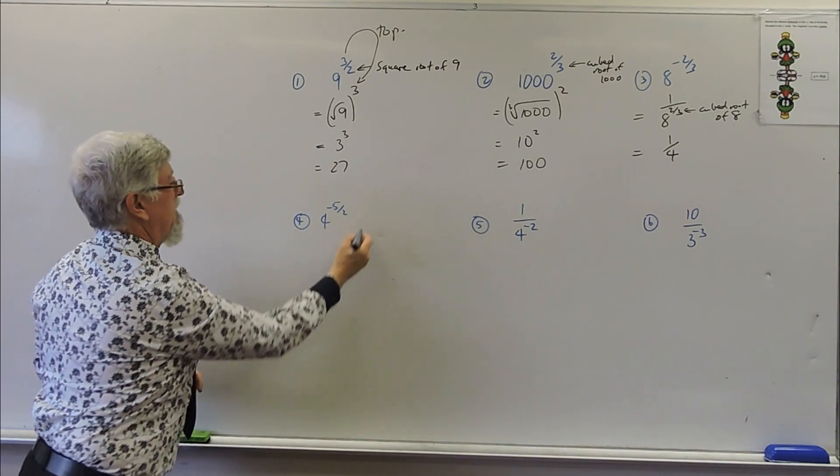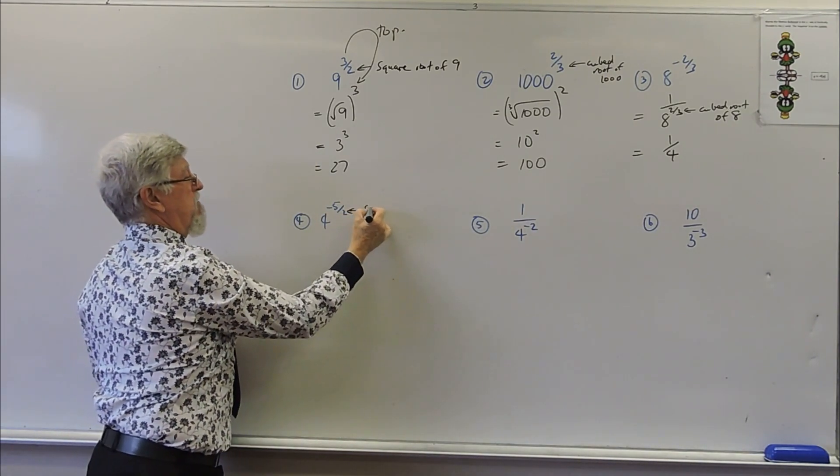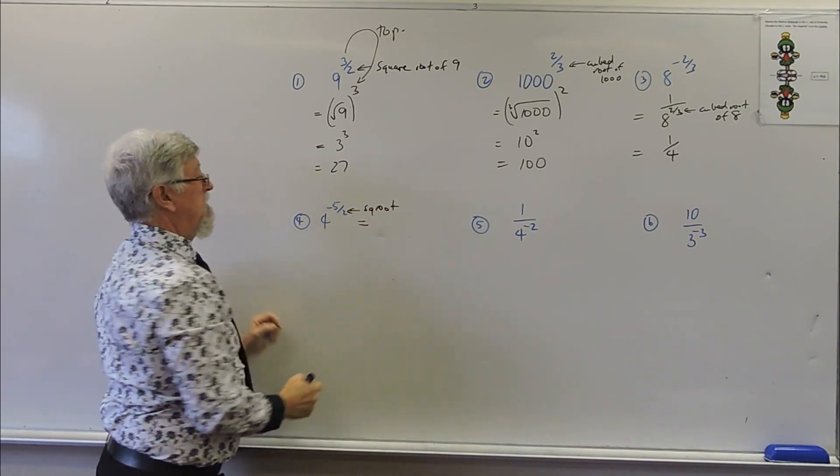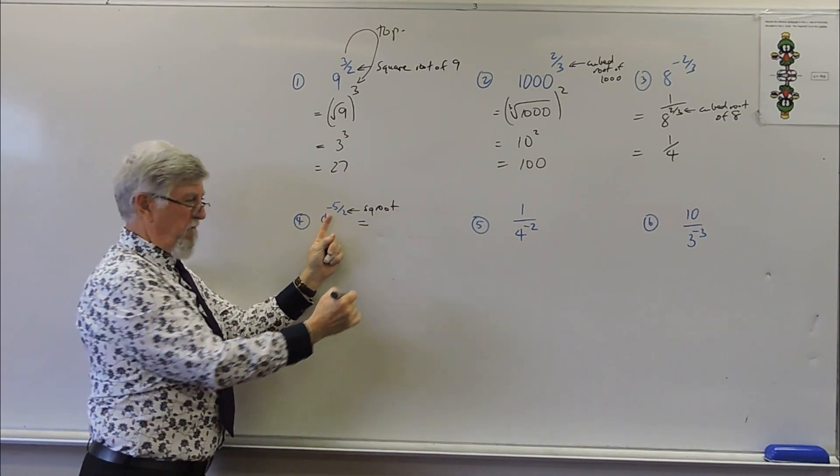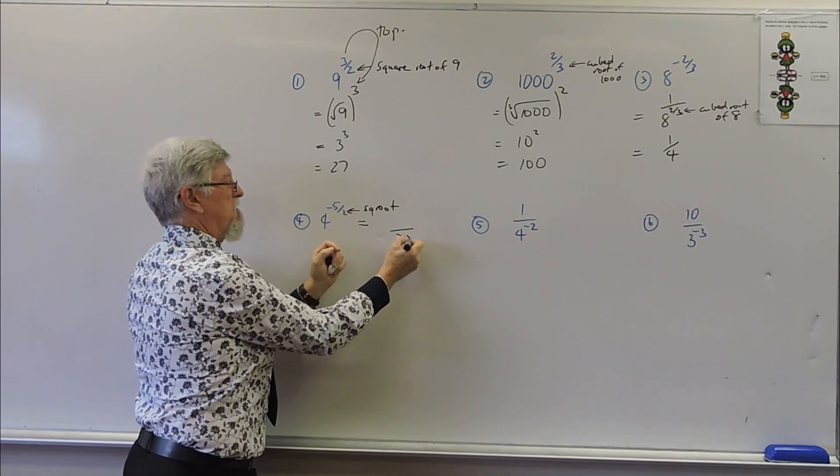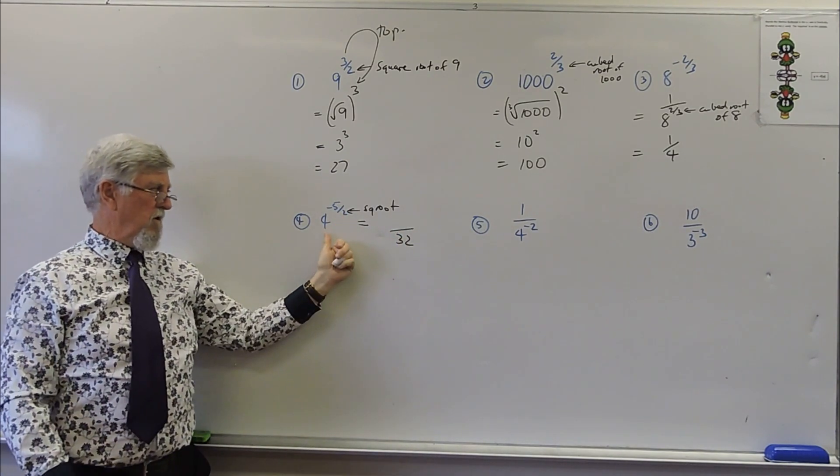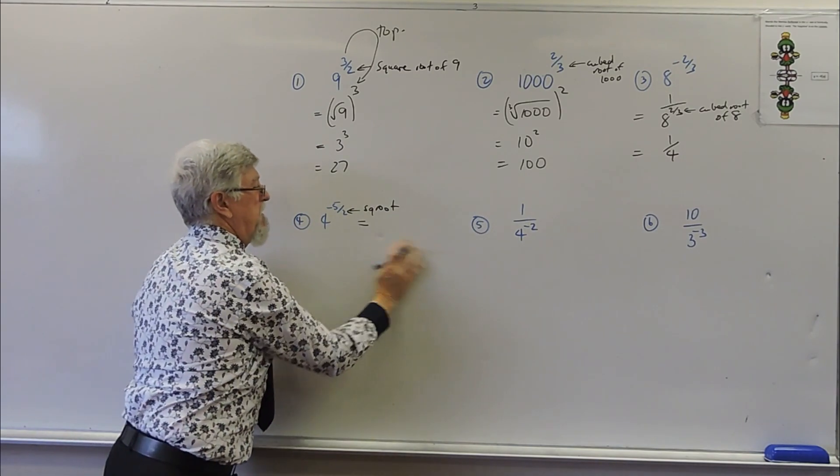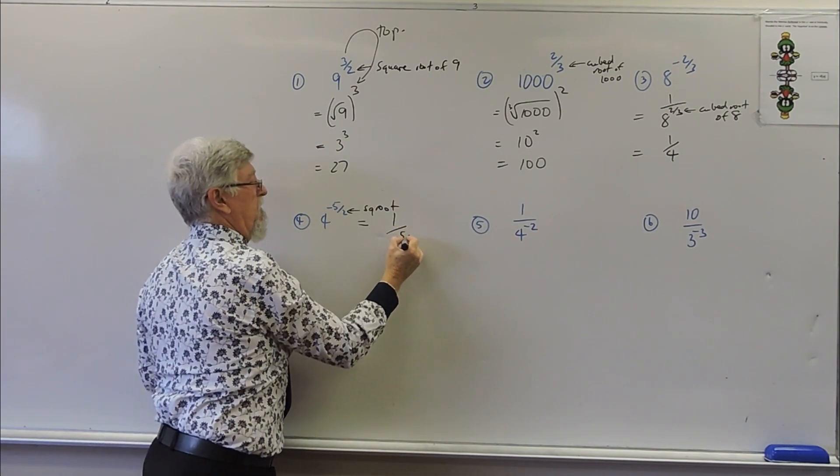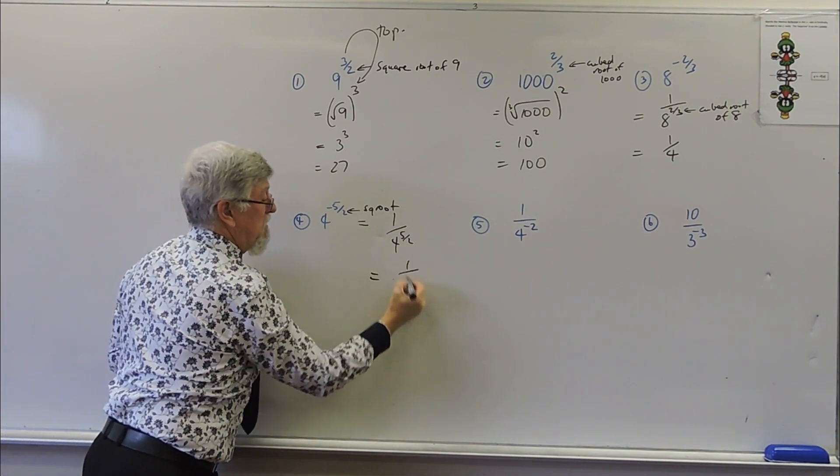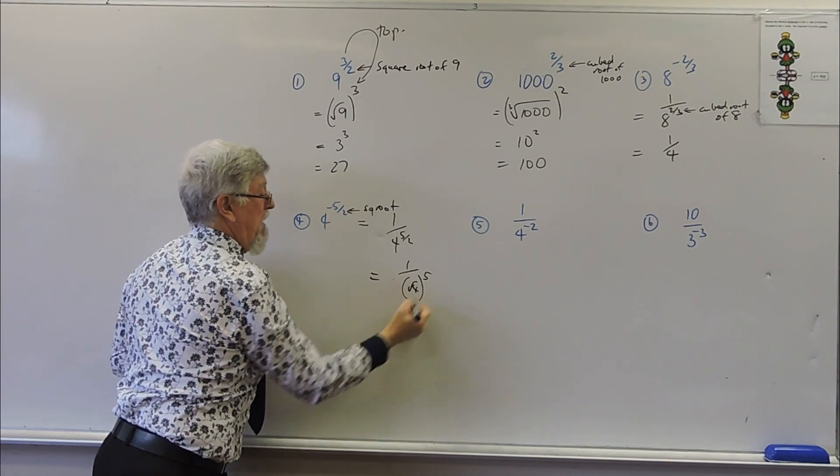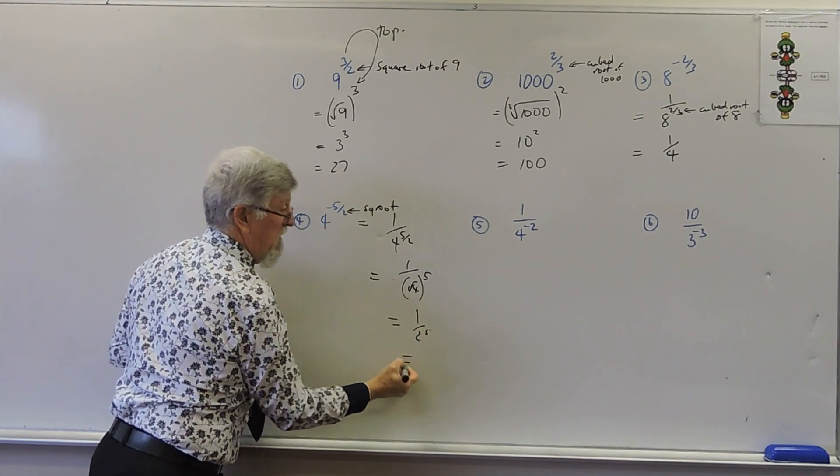This one will be square root of four, which is two. I want to write to the fifth power, so that's 32, and I put it on the denominator. Square root of four is two to the fifth power. I probably really should write that as one on four to the five on two. And then I could, if I wanted to, put one on the square root of four to the fifth power, which is one on two to the five, which is one on 32.